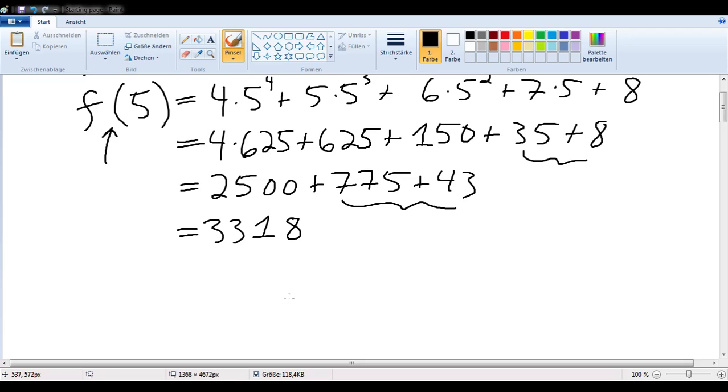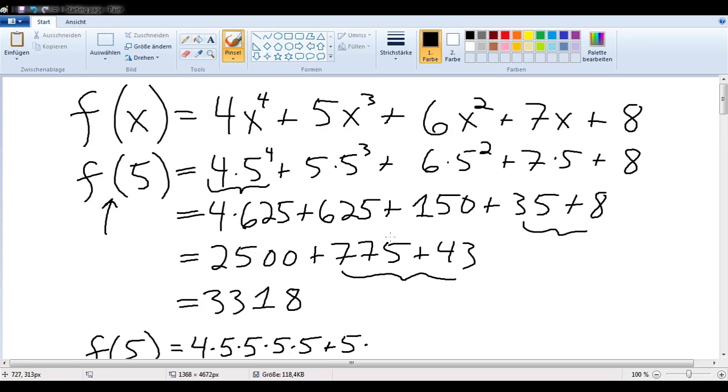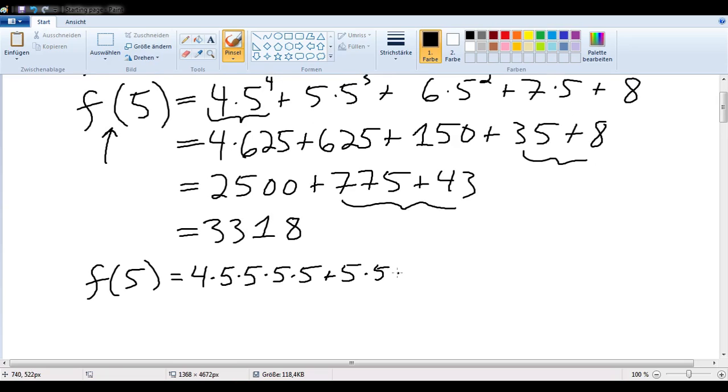So in order to see that this is not the most efficient way to calculate f of 5, let's take a closer look at what it is we're actually doing. So what we're actually doing when we're computing this in this way is saying 4 times 5, and I'm going to write these multiplication dots out, and write all the 5s out so that we can see where we're multiplying and how many times we're multiplying. So 4 times 5 times 5 times 5, right, that's this here, plus 5 times, that's 5 to the third, right, yes. So 5 times 5 times 5, plus 6 times 5 times 5, right, that's 5 squared here, plus 7 times 5, plus 8.